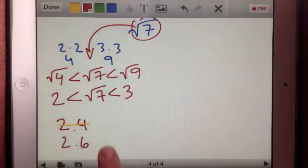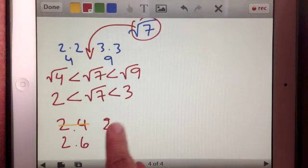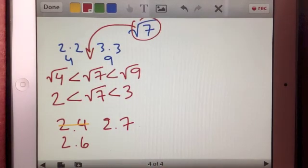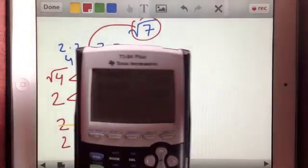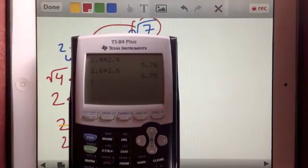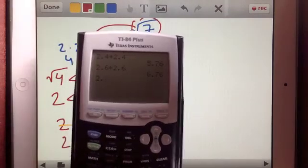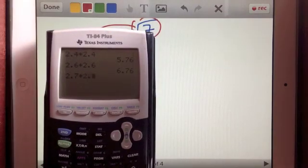I wonder what would happen, though, if I try 2.7. It might go over the square root of 7. But I'm not sure yet. It might go over 7. Let's see, 2.7 times 2.7 equals 7.29. Yes, it did pass the 7.